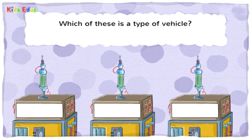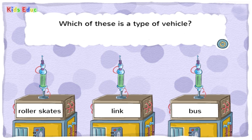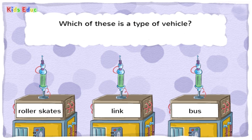Which of these is a type of vehicle? Roller skates. Link. Bus. — Bus. You got it! A vehicle is something such as a car, bicycle, or airplane used to carry and move people or things.